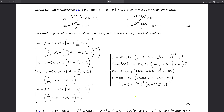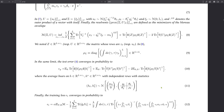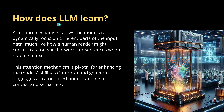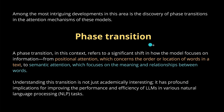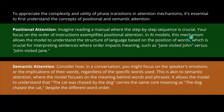To my knowledge, nobody ever did this before. This is not a trivial publication — I will read it in detail next weekend; this is just an introduction to the topic. If we have further insight into how large language models learn by looking at the attention mechanism, this would be a real improvement. The phase transition goes from positional attention — concerning the order or location of words — to semantic attention, which focuses on the meaning and relationships between words.